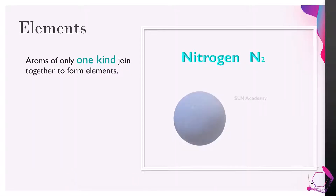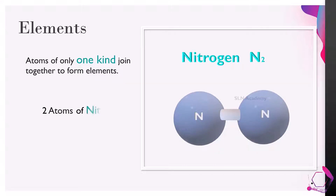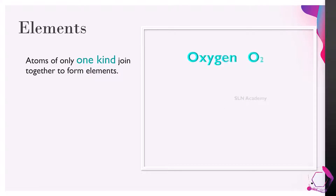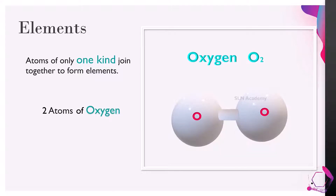Examples of elements are Nitrogen, which is represented by N2, which means it is made up of two atoms of nitrogen. Oxygen is represented by O2, which means it is made up of two atoms of oxygen. 66% of the mass of the human body is made up of oxygen atoms.